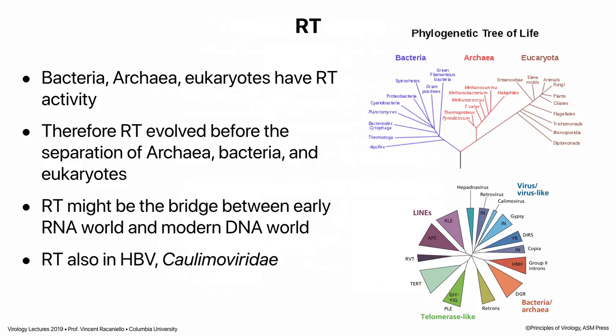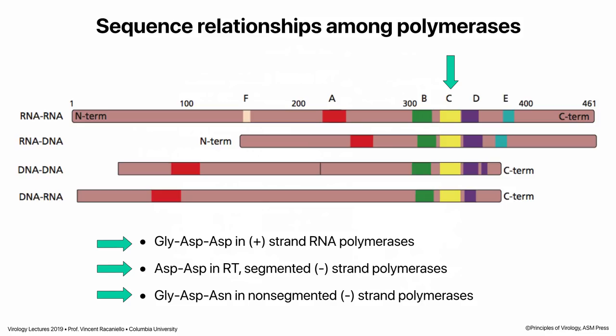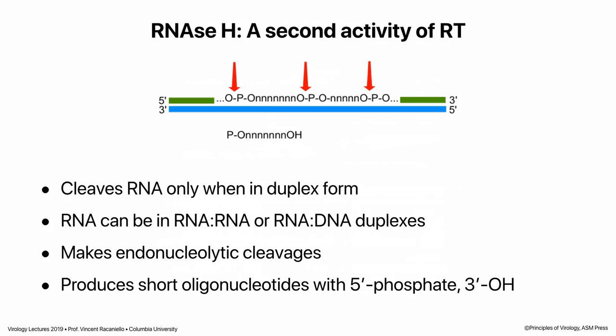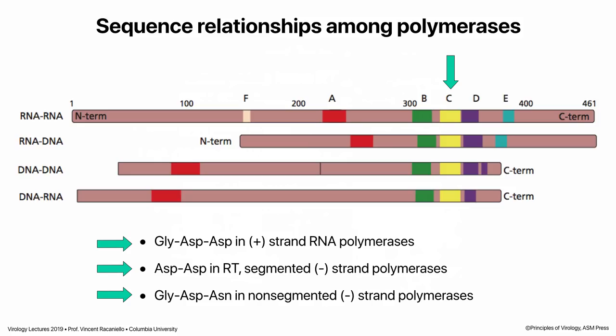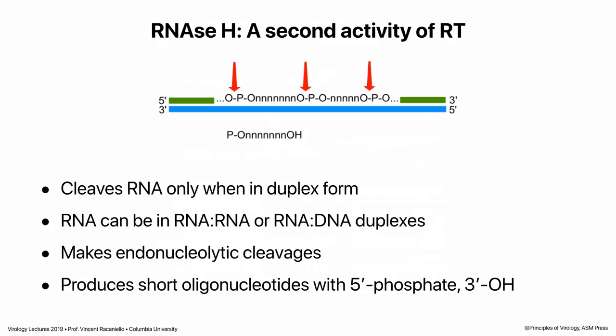If you look at the protein sequences of reverse transcriptase — RNA-dependent DNA polymerase — like all nucleic acid polymerases, it looks like a right hand with conserved regions. In particular, it has an active site with an ASP-ASP pair of amino acids that coordinates magnesium ions to drive the polymerization process. These four groups of polymerase derive from a common ancestor, including reverse transcriptase.